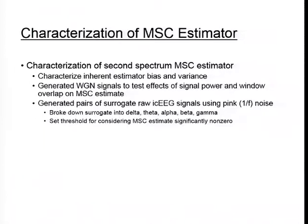We also generated pairs of surrogate raw intracranial EEG signals using pink or 1/f noise. We generated white Gaussian noise signals at the same sampling frequency as our raw intracranial EEG, performed an FFT, applied a 1/f filter, and then performed an inverse FFT.